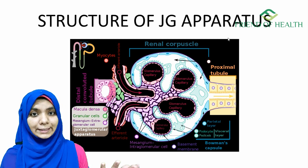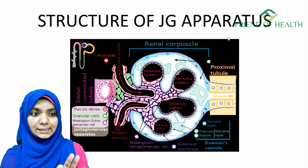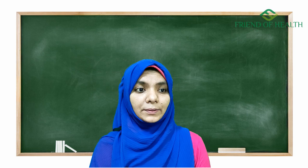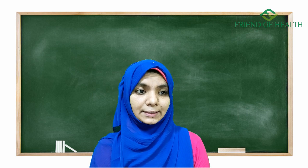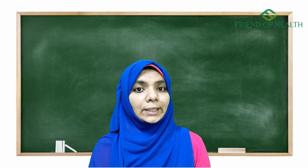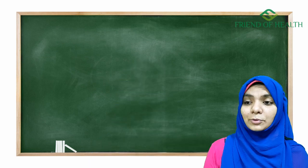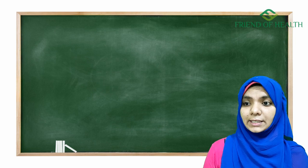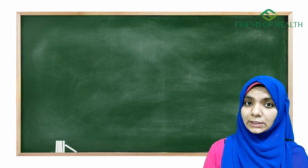These three layers together form a filtration barrier. The glomerular capillary differs from a normal capillary by these three things — together they form the filtration barrier. There are chances to get a question from this area, so let's see a little more about the juxtaglomerular apparatus.